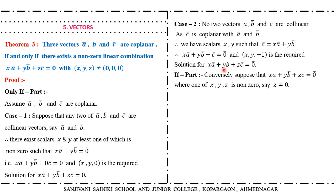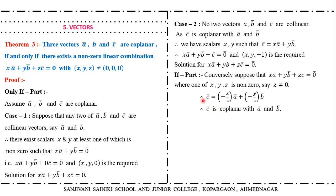Now the if part: suppose X·A bar plus Y·B bar plus Z·C bar equals zero where X, Y, Z are not all zero simultaneously. Taking Z as nonzero, we divide the equation by Z, giving C bar equals minus X over Z times A bar plus minus Y over Z times B bar. So C bar is expressed as a linear combination of A bar and B bar, implying C bar is coplanar with A bar and B bar by the previous theorem. Hence the vectors are coplanar.